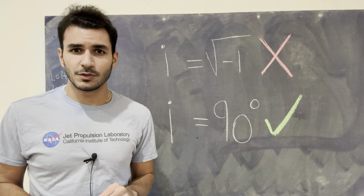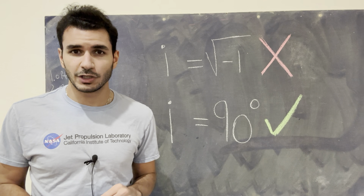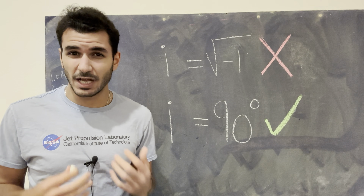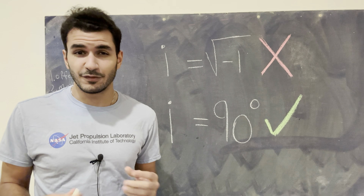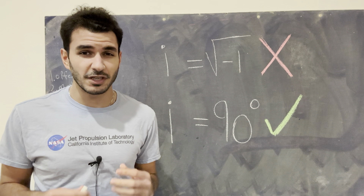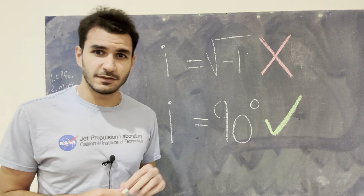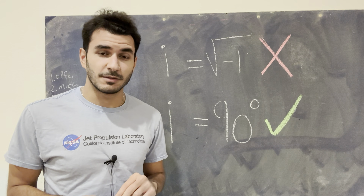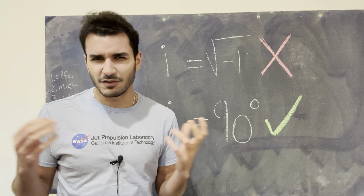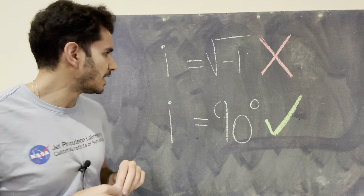My name is Ali Al-Karagouli. I am a post-doctoral fellow at the NASA Jet Propulsion Lab. In this video, I'm going to show you how imaginary numbers are not imaginary. In fact, the name imaginary is really stupid and we should probably stop using it. I'm going to show you the math perspective on imaginary numbers, and I'm going to show you the physics and engineering perspective, which is kind of the math perspective but with the application in mind.